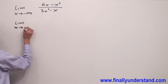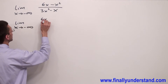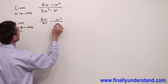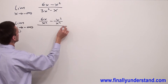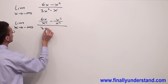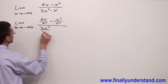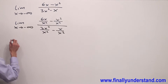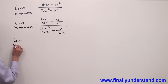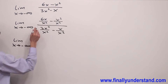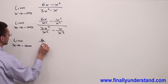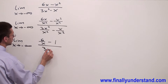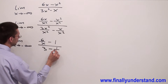So we have limit x goes to negative infinity and we divide: 6x over x squared minus x squared over x squared, and 3x squared over x squared minus x over x squared. Reducing these fractions, we get limit x goes to negative infinity: 6x over x squared is 6 over x, minus 1, over 3 minus 1 over x.